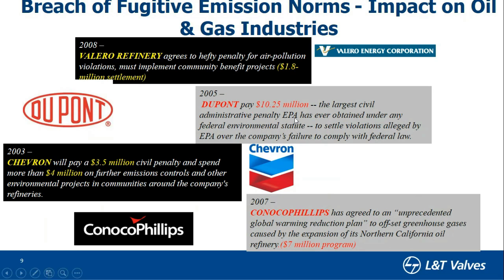DuPont paid about $10 million US dollars as a penalty. Many oil and gas companies are being penalized, and that is why they require low-emission valves. They put conditions that valves should have low emissions in any refinery, chemical plant, or other facility. Valves and pipe fittings form a major portion in terms of quantity. Equipments like heat exchangers are Category A items — number-wise very few — whereas valves and pipe fittings represent about 80% of quantity and about 20% of value.